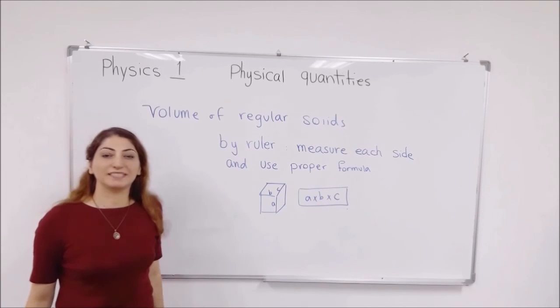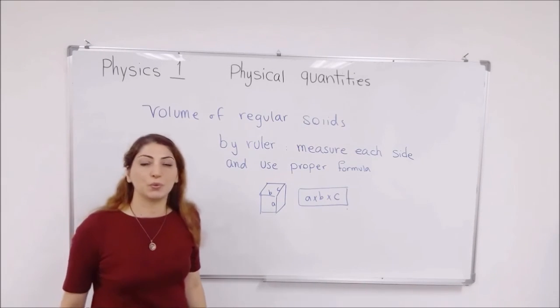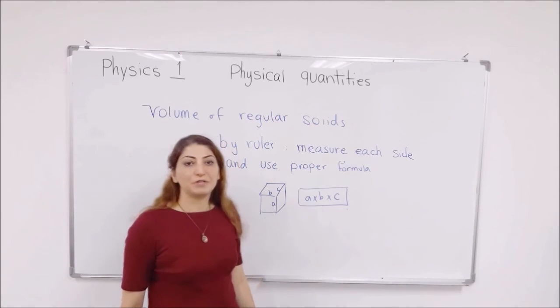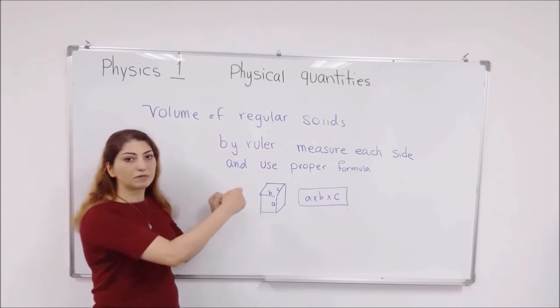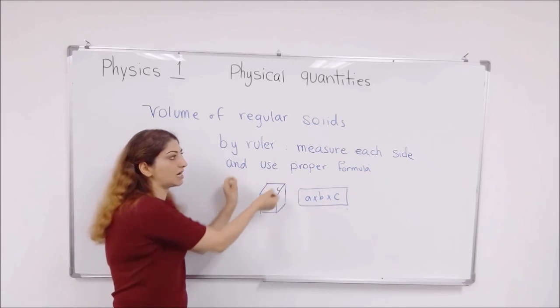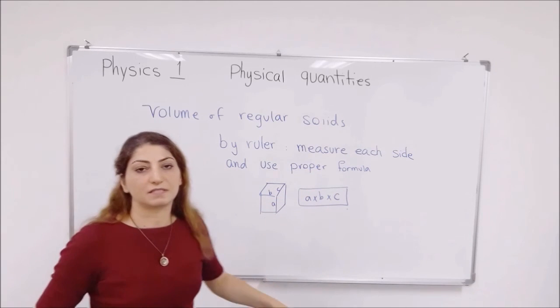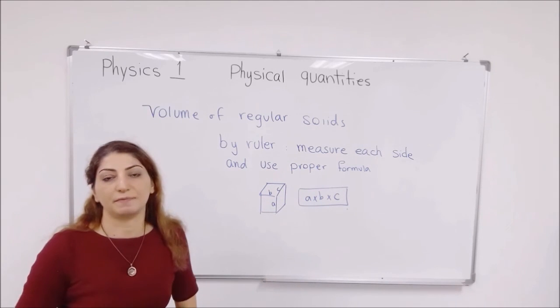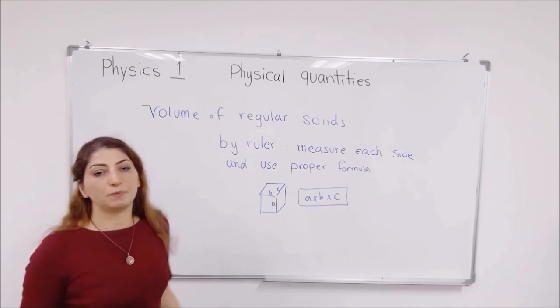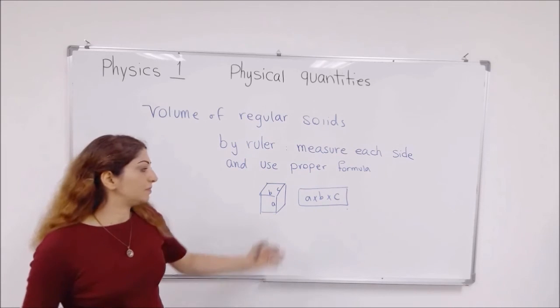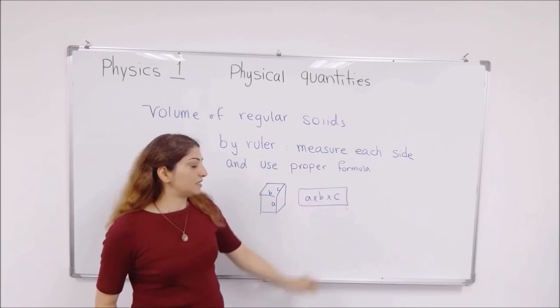And finally, if you want to know the volume of a regular solid, for example, like a cube or a rectangular prism, you just simply take a ruler or a meter and measure its size, and then put it in the proper formula that is for that specific shape. If it is a cube, it would be A cubed. Where it is a rectangular prism, it becomes A times B times C.